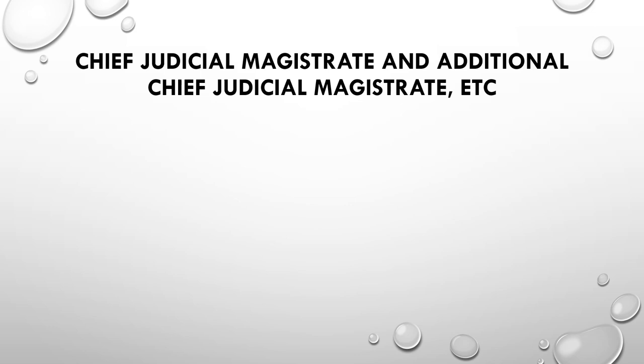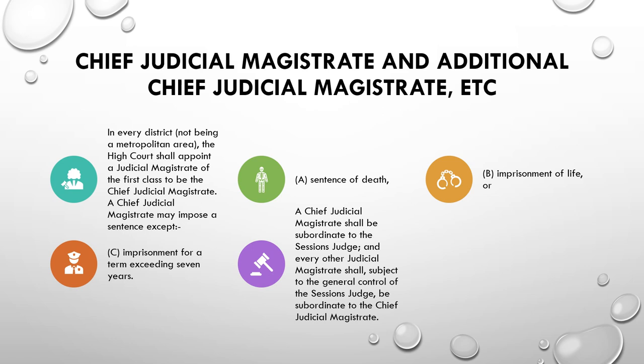Next is the Chief Judicial Magistrate and Additional Judicial Magistrate. In every district not being a metropolitan area, the High Court shall appoint a Judicial Magistrate of the First Class to be the Chief Judicial Magistrate. A Chief Judicial Magistrate may impose any sentence except a death sentence, imprisonment for life, or imprisonment for a term exceeding seven years. A Chief Judicial Magistrate shall be subordinate to the session judge, and every other judicial magistrate shall, subject to the general control of the session judge, be subordinate to the Chief Judicial Magistrate.